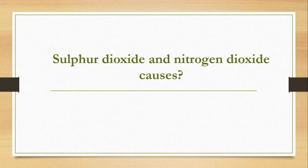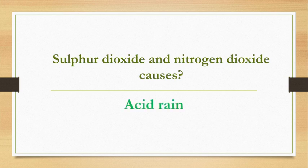Sulfur dioxide and nitrogen dioxide cause acid rains. Sulfur dioxide and nitrogen dioxide are responsible for acid rain.